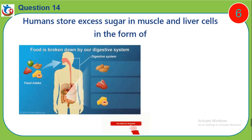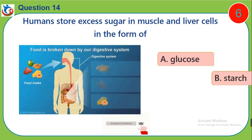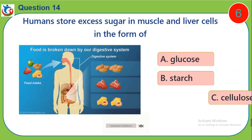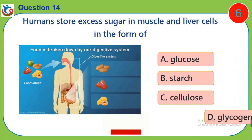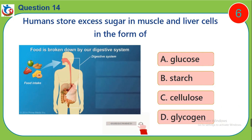Question 14. Humans store extra sugar in muscle and liver cells in the form of: A. Glucose, B. Starch, C. Cellulose, D. Glycogen.